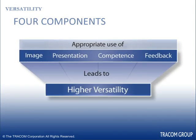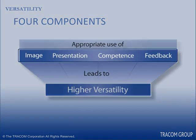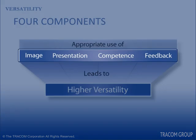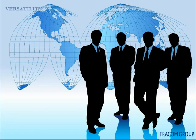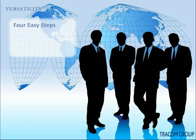By focusing on their own needs without considering the expectations of others, they allow their behavior to get in the way of their relationship with others, thus harming productivity. Versatility is based on an individual's effective and appropriate use of image, presentation, competence, and feedback, as perceived by others. Highly versatile people use their understanding of social style and versatility when working with others by following four easily learned steps.